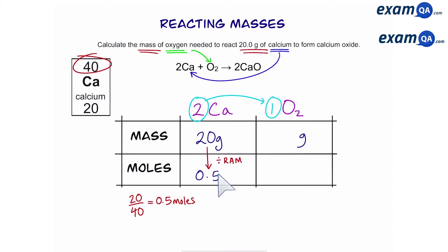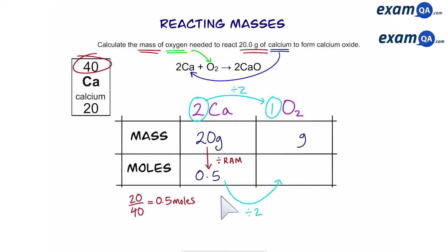Next, to go from calcium to oxygen, we're going to use the big numbers. As you can see, it's a 2 to 1 ratio. Because there's nothing in front of oxygen, we can just assume it's 1. That means you're going to divide your moles by 2. So 0.5 divided by 2 gives you 0.25 moles.